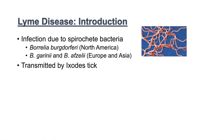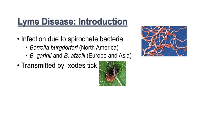The Borrelia bacteria is transmitted by the exotic tick pictured here, and the tick itself will actually be infected with the Borrelia bacteria after biting a small rodent. Small rodents, such as mice or rats, actually act as a primary reservoir for Borrelia bacteria.